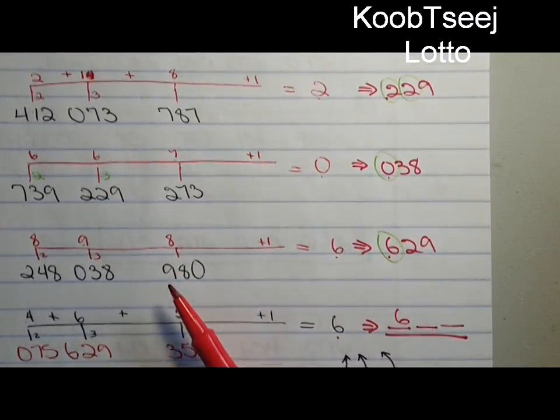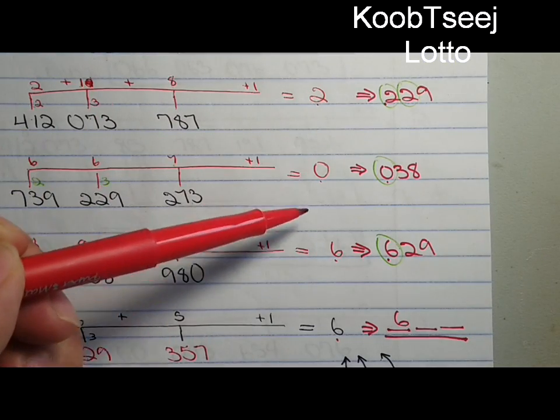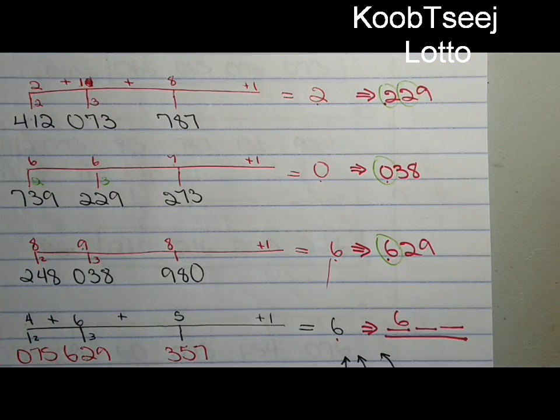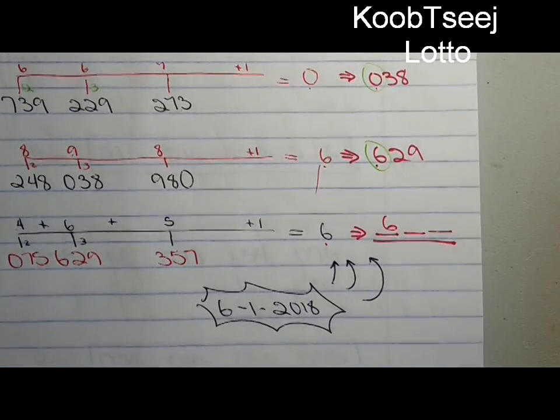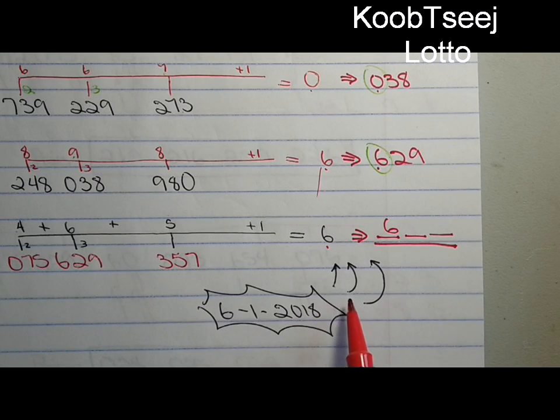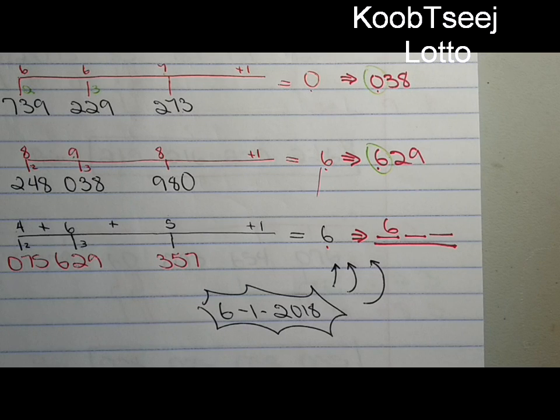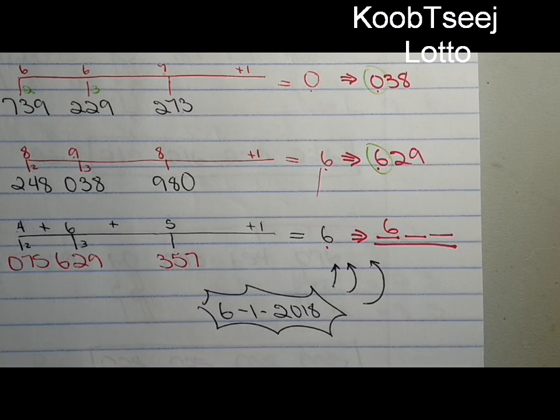So tonight you have two very hard digits - the open digits. For Malaysia, you can follow this formula to win a lot of money. Alright guys, take care. Bye.